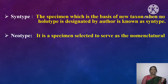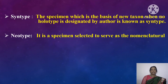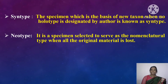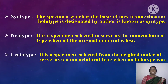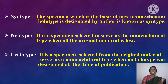Syntype — the specimen which is the basis of a new taxon when no holotype is designated by the author. The author may forget or may not designate for some reason; then that specimen will be considered as syntype. Neotype — a specimen selected to serve as the nomenclature type when all the original material is lost. Electrotype — a specimen selected from the original material which serves as a nomenclature type when no holotype was designated at the time of publication.